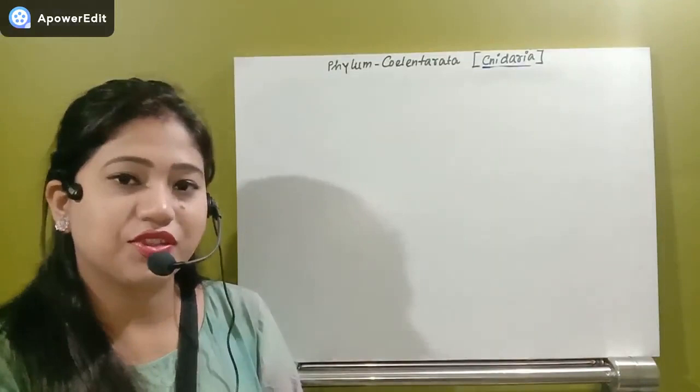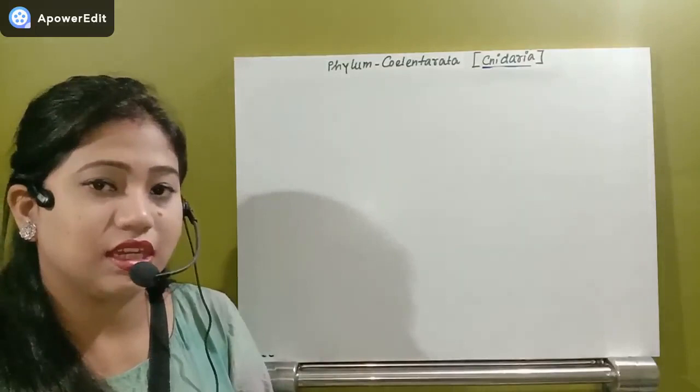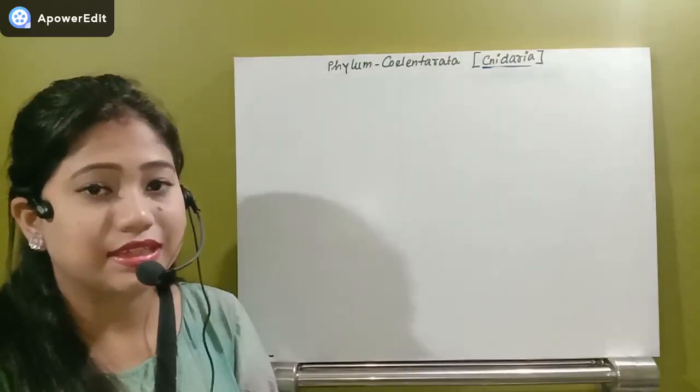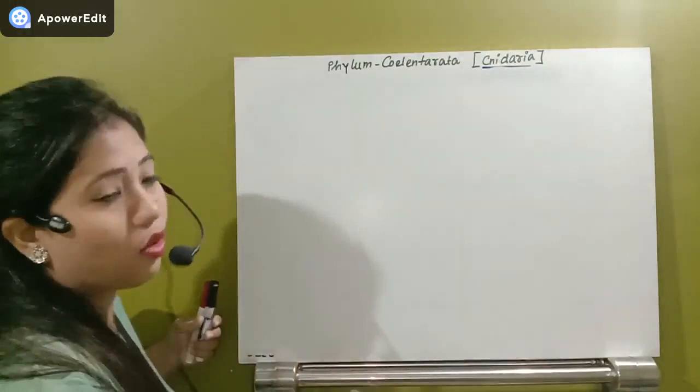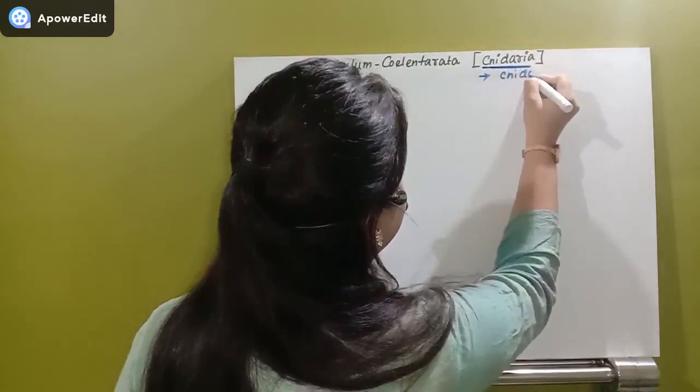Hello students, today we are going to start with the next phylum, that is Phylum Coelenterata. Coelenterates are also known as Cnidaria. The reason they are called Cnidaria is because their body surface bears a specific cell known as cnidoblast.